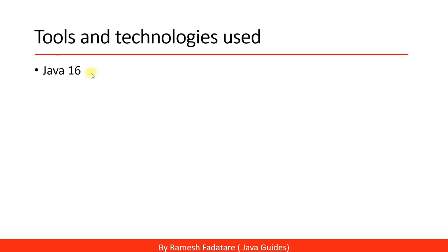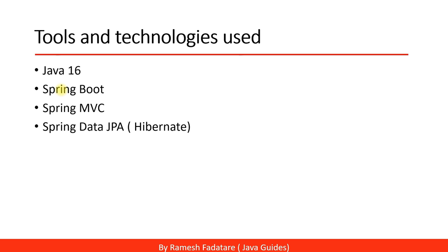We're going to use Java 16, the latest release of Java as of now. Make sure you have Java 16 installed, but you can use Java 8, 11, or 15 as per your installation — just ensure Java 8 or above. We'll use the latest release of Spring Boot, Spring MVC, Spring Data JPA (which internally uses Hibernate as JPA provider), MySQL database, and Thymeleaf template engine for the view layer.